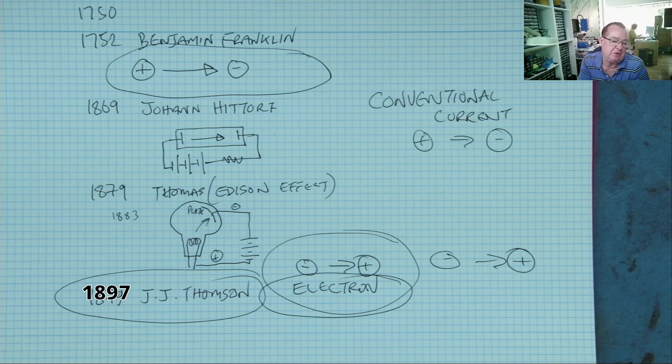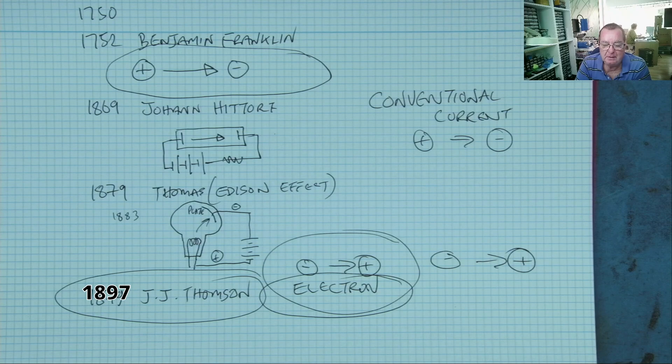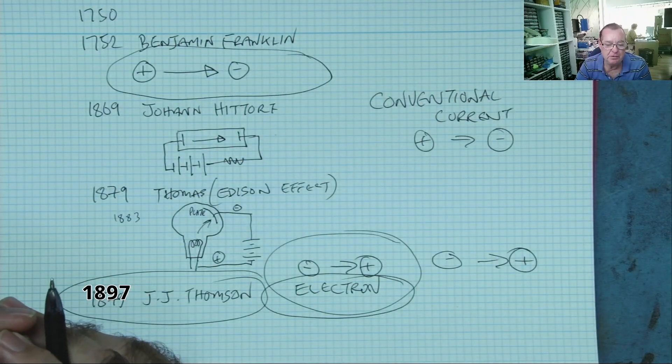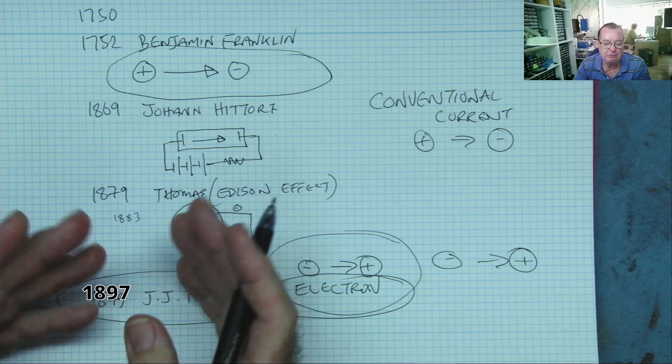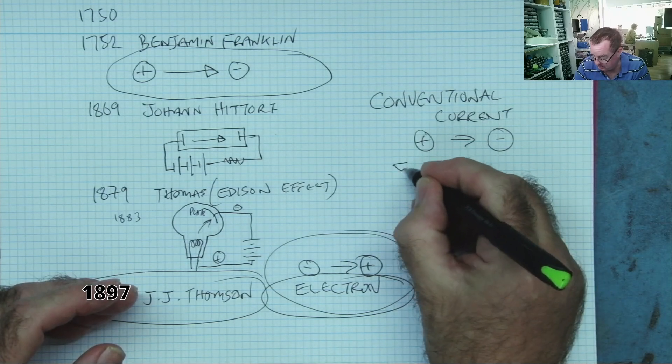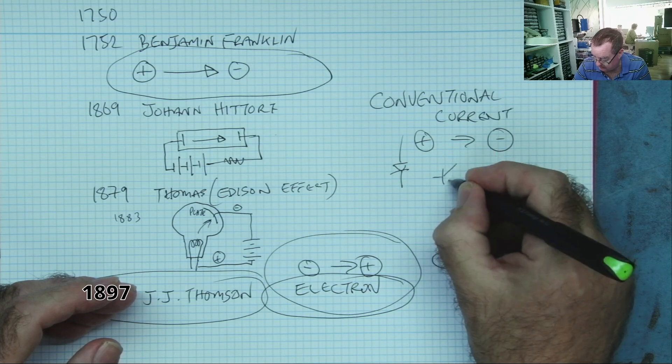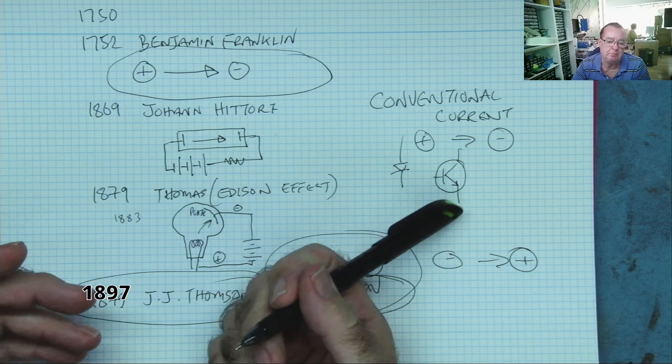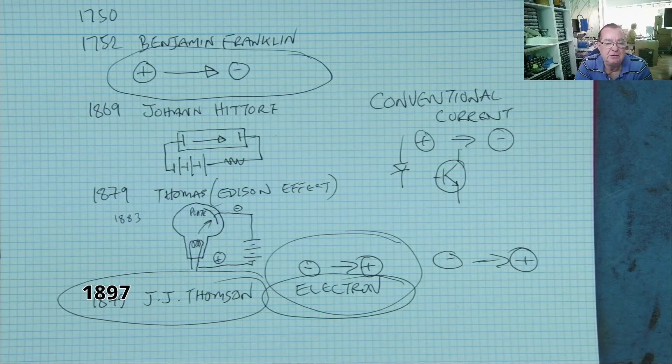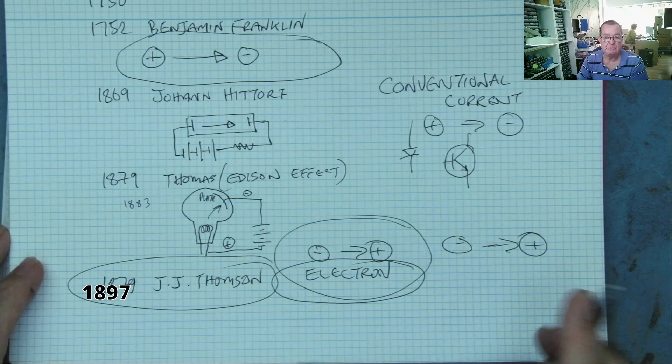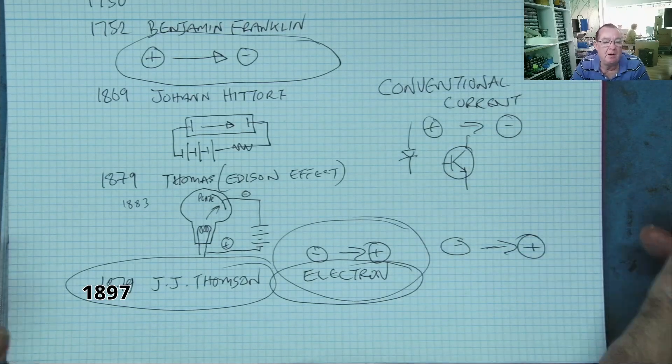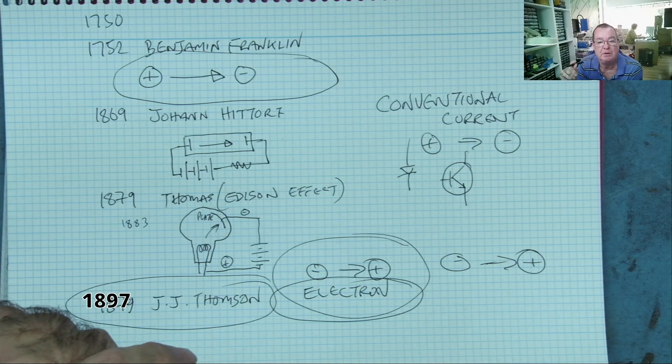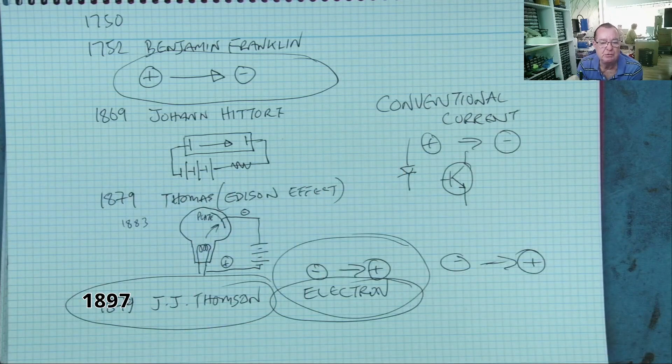This, by the way, is where we get the word electronics from—because electronics is based on this. The only time you will notice that there is an error in conventional current is when you look at the symbols for some of the electronic components, and you'll notice that a lot of the symbols contain arrows in them. You'll notice that the arrow is pointing the wrong way—it's not pointing in the direction that the electrons are flowing, it's pointing in the direction of conventional current. But those of us who still know this is the truth can live with that. We understand why it's like that. What I would say basically is use whichever convention suits you best. If you prefer to work in conventional current—and I work in conventional current, so all this tutorial will be based in conventional current—do so.